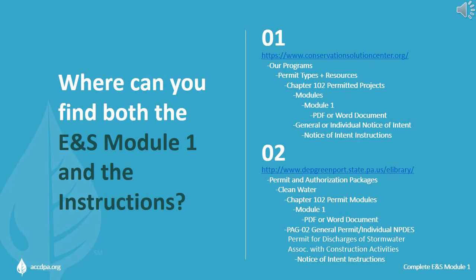Where can you find both the ENS Module 1 and the helpful NOI instructions? I've provided two different links. The first is Allegheny County Conservation District's link, with steps from our homepage to get you to that document. The second is a direct link from DEP's website. This can be a little difficult from either website, so please feel free to get in touch with ACCD and we can help you find these forms.